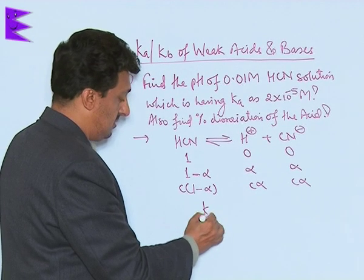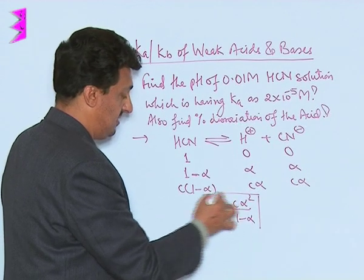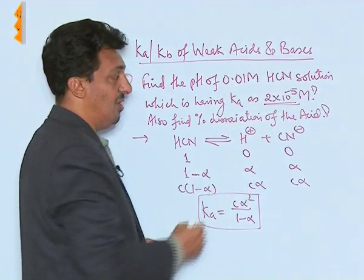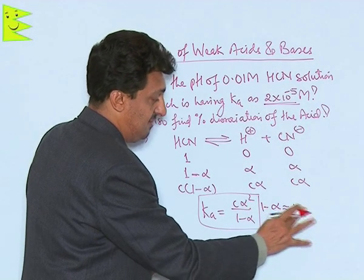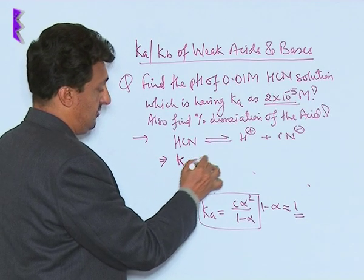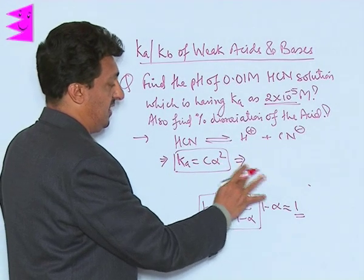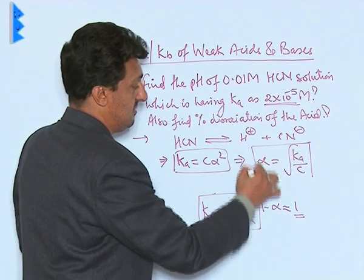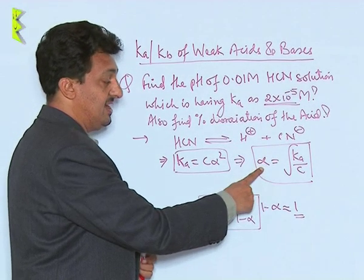We know Ka = Cα² / (1 − α). Since Ka is very small, we can neglect alpha in the denominator, so 1 − α ≈ 1. Therefore, the dissociation constant simplifies to Ka = Cα², and from here we can find alpha = √(Ka / C), which gives us the degree of dissociation.